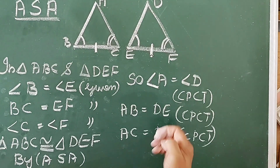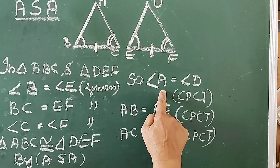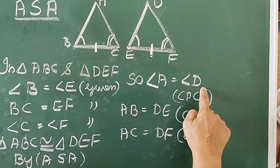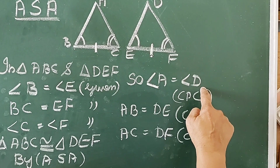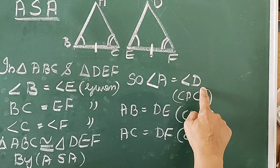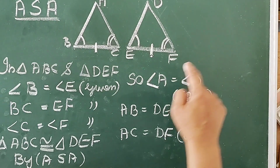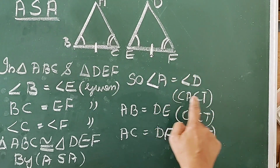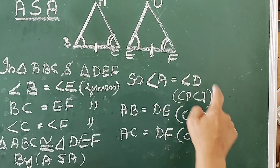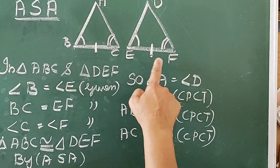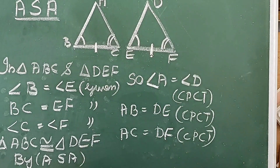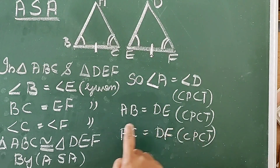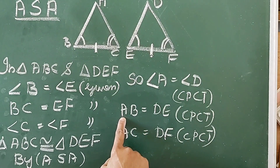Therefore, triangle ABC is congruent to triangle DEF by ASA. So, angle A equal to angle D by CPCT — corresponding parts of congruent triangles.